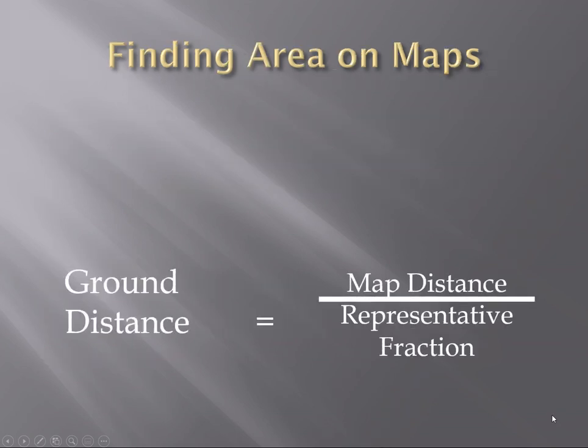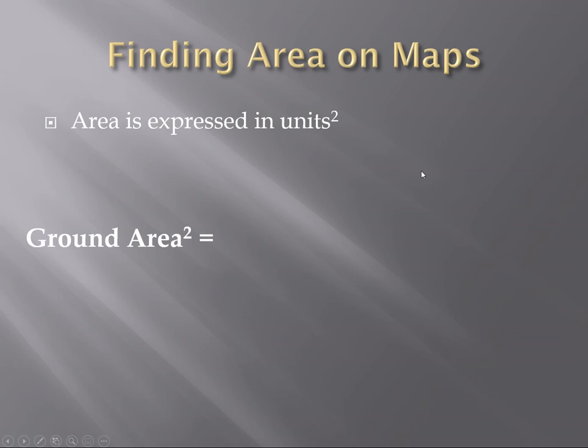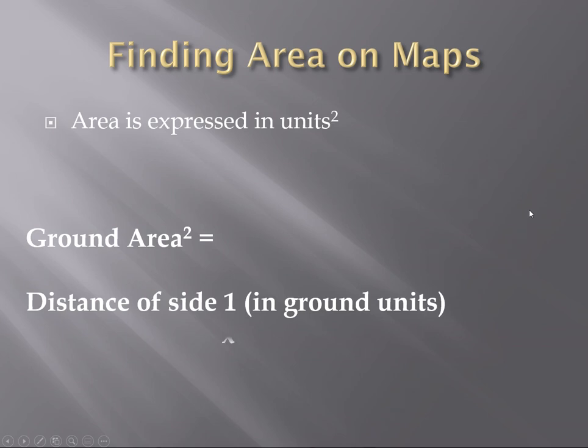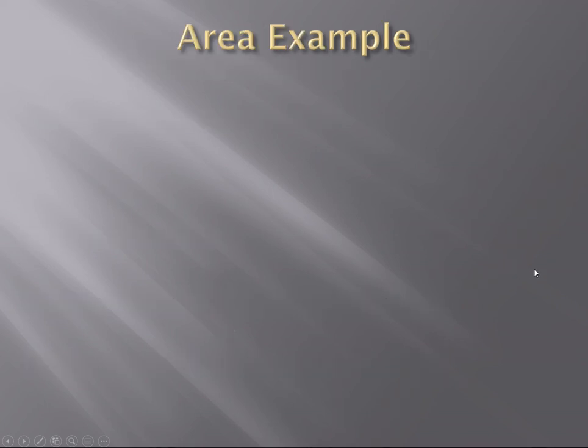So to find areas, we have ground distance equals the map distance divided by the representative fraction. Area is expressed in units squared, which means that our ground area squared is the distance of side 1 in ground units times the distance in side 2 in ground units, and that gives us the ground area. That's for a rectangle, right?